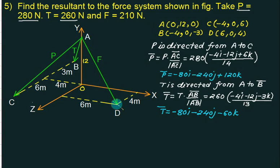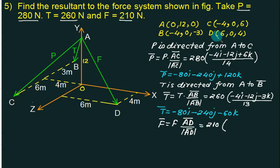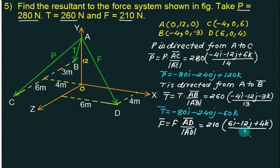The next force F is directed from A to D. F-bar equals F times AD-bar divided by magnitude of AD. AD-bar equals D minus A gives (6i − 12j + 4k), and the magnitude is 14. Dividing by 14 and multiplying by the force value gives F-bar = 90i − 180j + 60k. Wait, checking: the coefficient yields 90i, −180j, plus 60k.